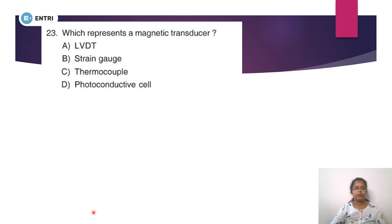Question No. 23: Which represents a magnetic transducer? LVDT, strain gauge, thermocouple, photoconductive cell. What is a transducer? A transducer is a device which converts one form of energy into electrical energy.